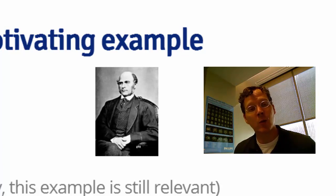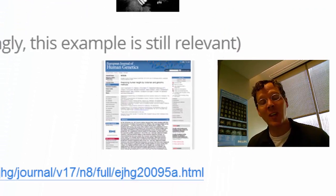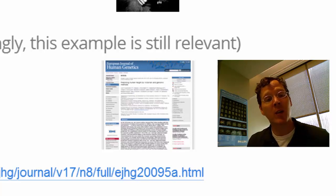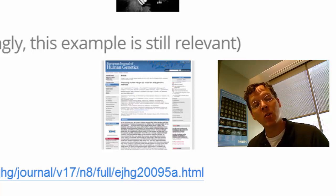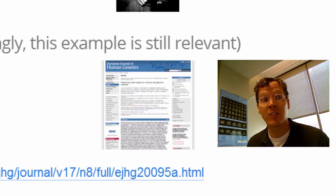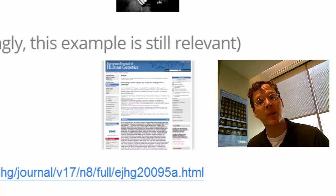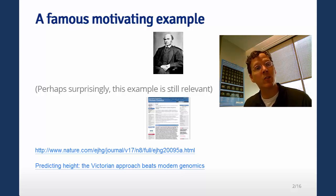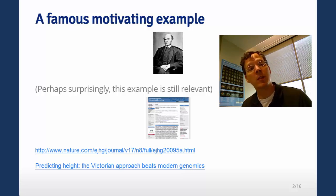My co-instructor Jeff Leek noted that this example is actually surprisingly still relevant. There's an article from the American Journal of Human Genetics where they compare modern genetic data using high-throughput bioinformatics to the old Victorian-era measurements created by Francis Galton, and see that it doesn't do too much better. It's a very interesting and quirky take on modern genetics, and it reminds us about the importance of what Francis Galton did and how ahead of his time he really was.